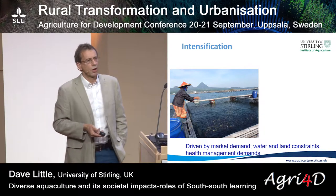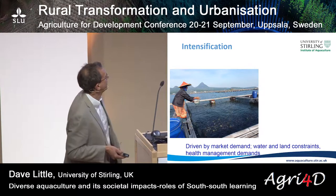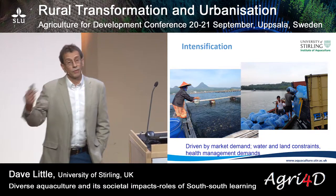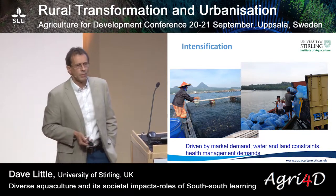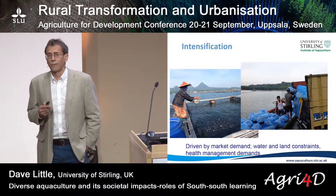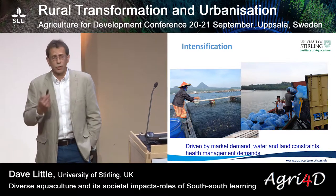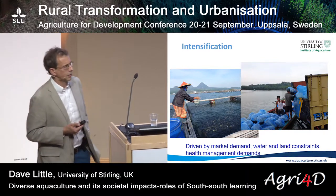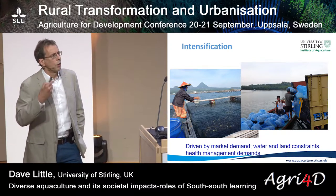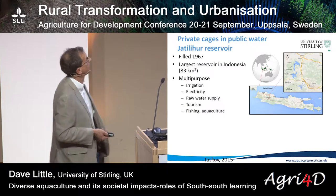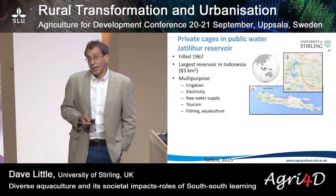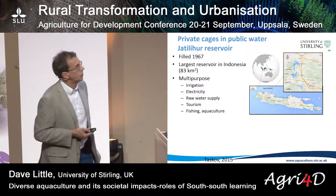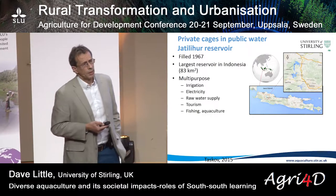A lot of this comes out of the process of intensification. Here in West Java, Indonesia — one of the most densely populated places in the world — you can clearly see this culture of small live common carp, a specific feature of that market, driven by market demand. In other places, water and land constraints are forcing or stimulating this intensification. In some cases, such as shrimp, health management is really pushing intensification — more intensive, more biosecure systems to try and control disease problems. The issue of private cages in public water is a big one in many emerging areas around the world.